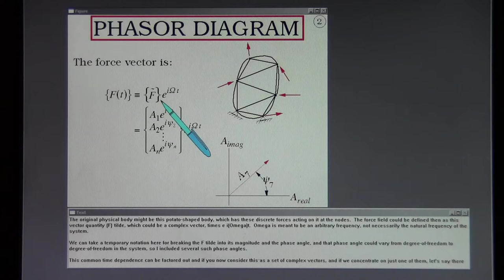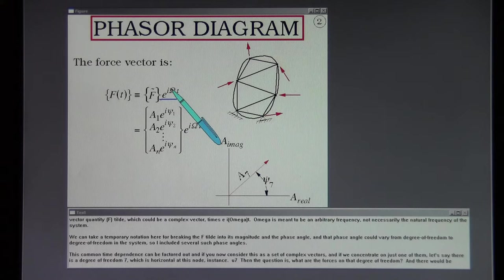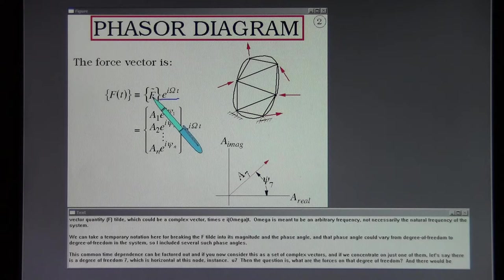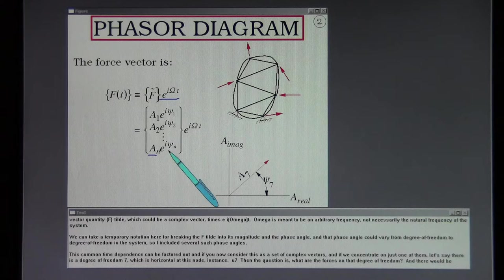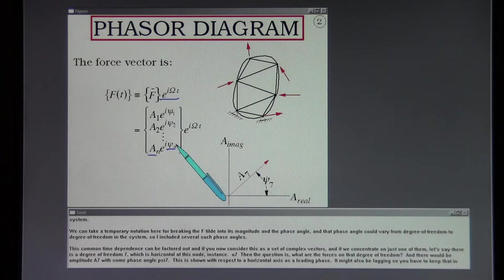Capital omega is meant to be an arbitrary frequency not necessarily the natural frequency of the system. We can take a temporary notation here for breaking the f capital f tilde into its magnitude and the phase angle. And that phase angle could vary from degree of freedom to degree of freedom in the system. So I've included several such phase angles. This common time dependence can be factored out.